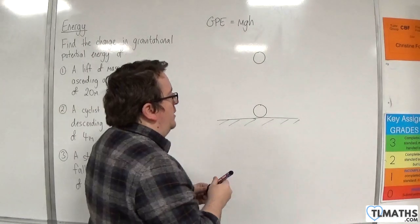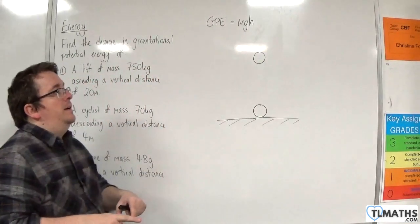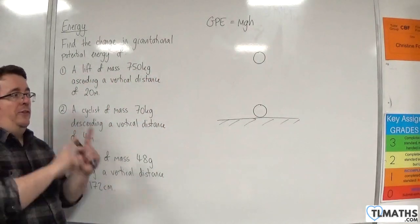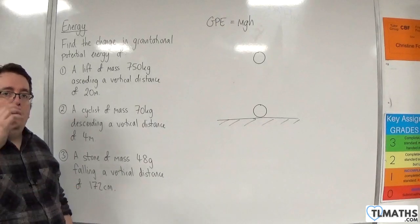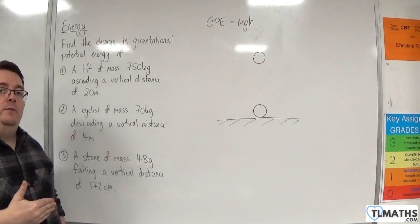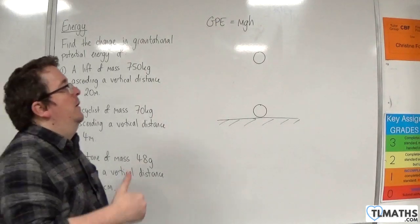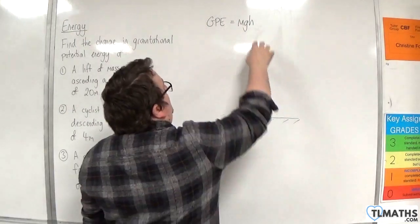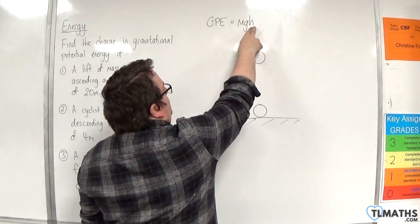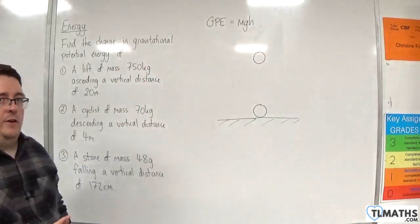So quite often when we look at these problems to do with GPE, we decide on working from one point as being ground level. So at that point, the GPE is going to be zero because the height is zero, and so that eases the calculations.